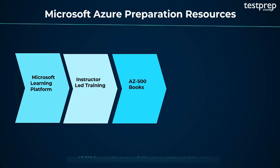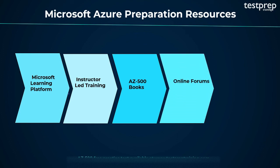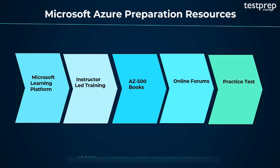Third, AZ-500 Books: books are the most important ingredient of certification preparation — the oldest yet most efficient way to prepare. The marketplace is flooded with AZ-500 books which can give your preparation an upper hand. Fourth, Online Forums: online forums are ideal additions to the preparation journey. Candidates often face distractions and obstacles, and online forums and study groups prove to be the ultimate salvation. Joining community centers helps you meet like-minded people preparing for AZ-500 and other Azure certification exams. Fifth, Practice Tests: practice tests provide candidates with the experience of a real examination, offering quick results and detailed performance reports to identify areas of strength and weakness across different domains.